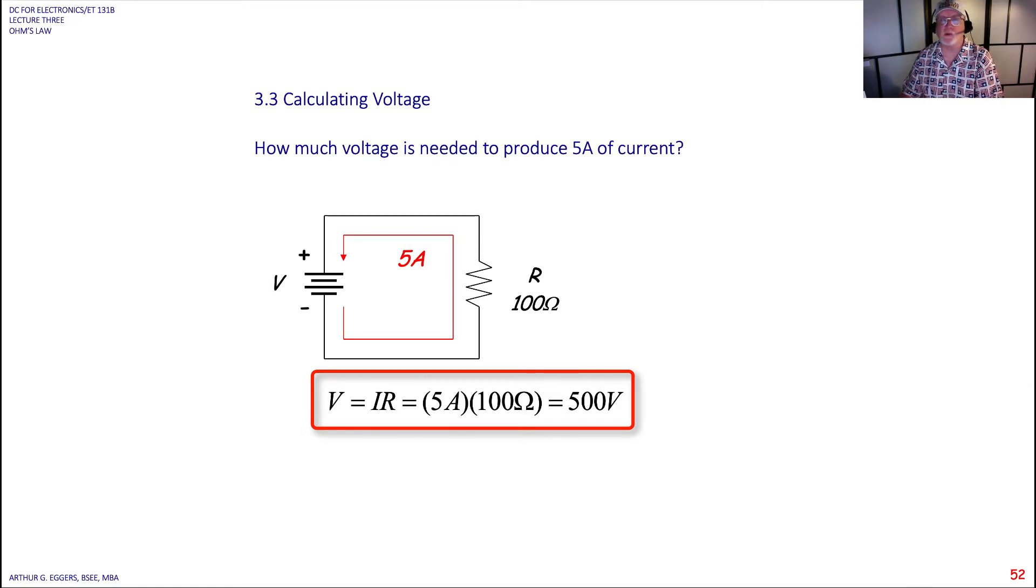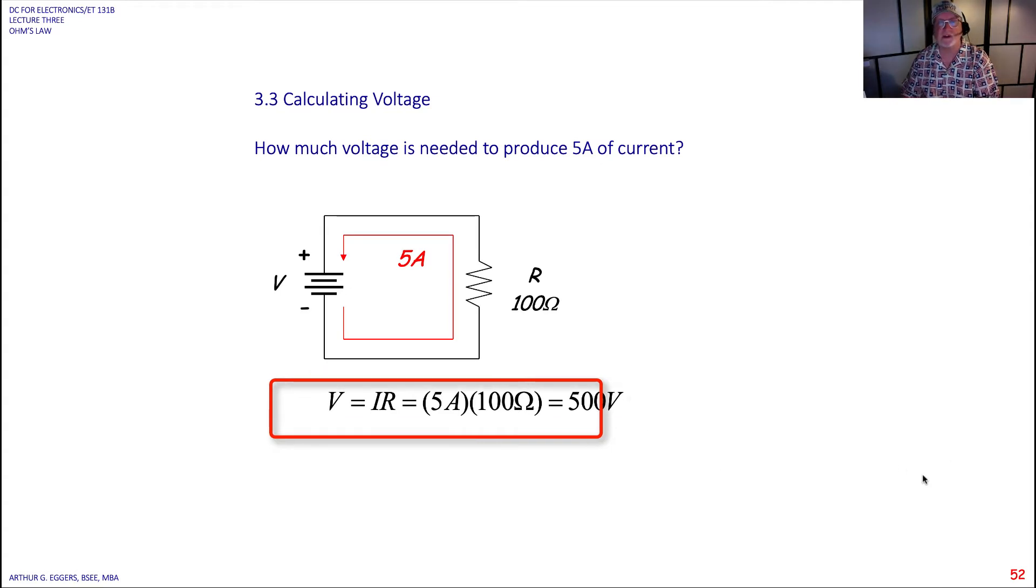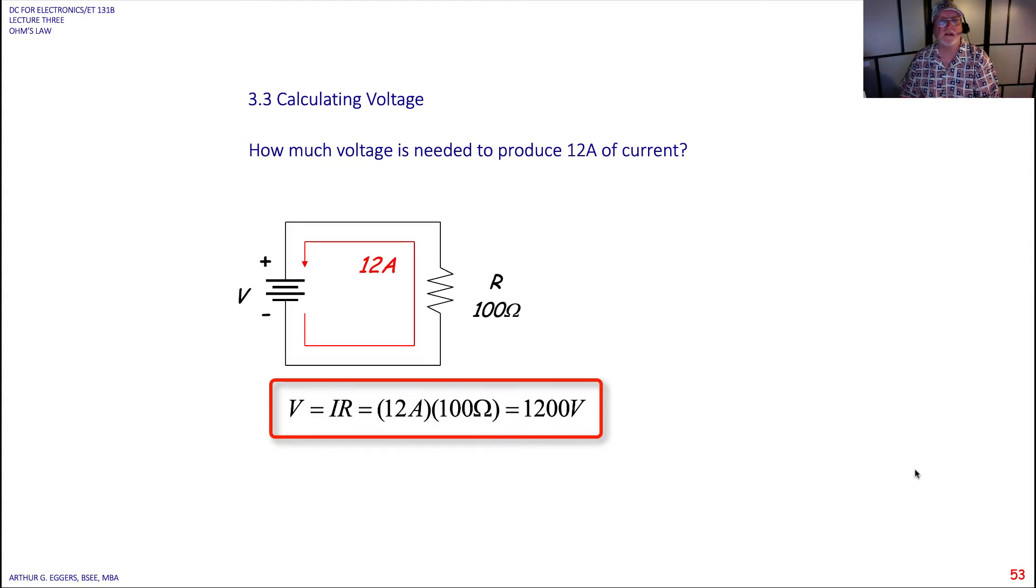Okay, we saw this before. Again, pull out your notebook and work through these so that you understand how to use the metrics and the exponentials in solving for this. Again, we're looking at voltage equals current times resistance. Here we have 12 amps being pushed through a 100 ohm resistor and we end up with 1200 ohms of voltage.